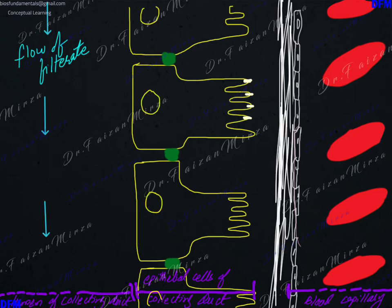These cells which are making the collecting duct have a single cell lining and they have a basal surface and an apical surface. The apical surface faces the lumen where the filtrate is traveling, and the basal surface faces the blood vessels and the tissue fluid. The filtrate and the tissue fluid do not mingle because of the tight junctions.